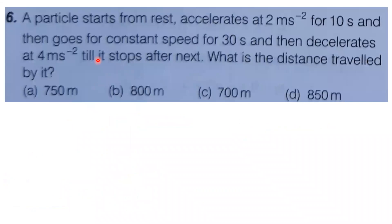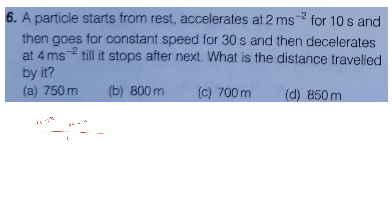Sixth question: a particle starts from rest, accelerates at 2 meter per second square for 10 seconds, then moves at constant speed for 30 seconds, then decelerates at 4 meter per second square until it stops. Find the total distance traveled. There are three parts: part one — starts from rest, u equals 0, acceleration equals 2 meter per second square, time equals 10 seconds.